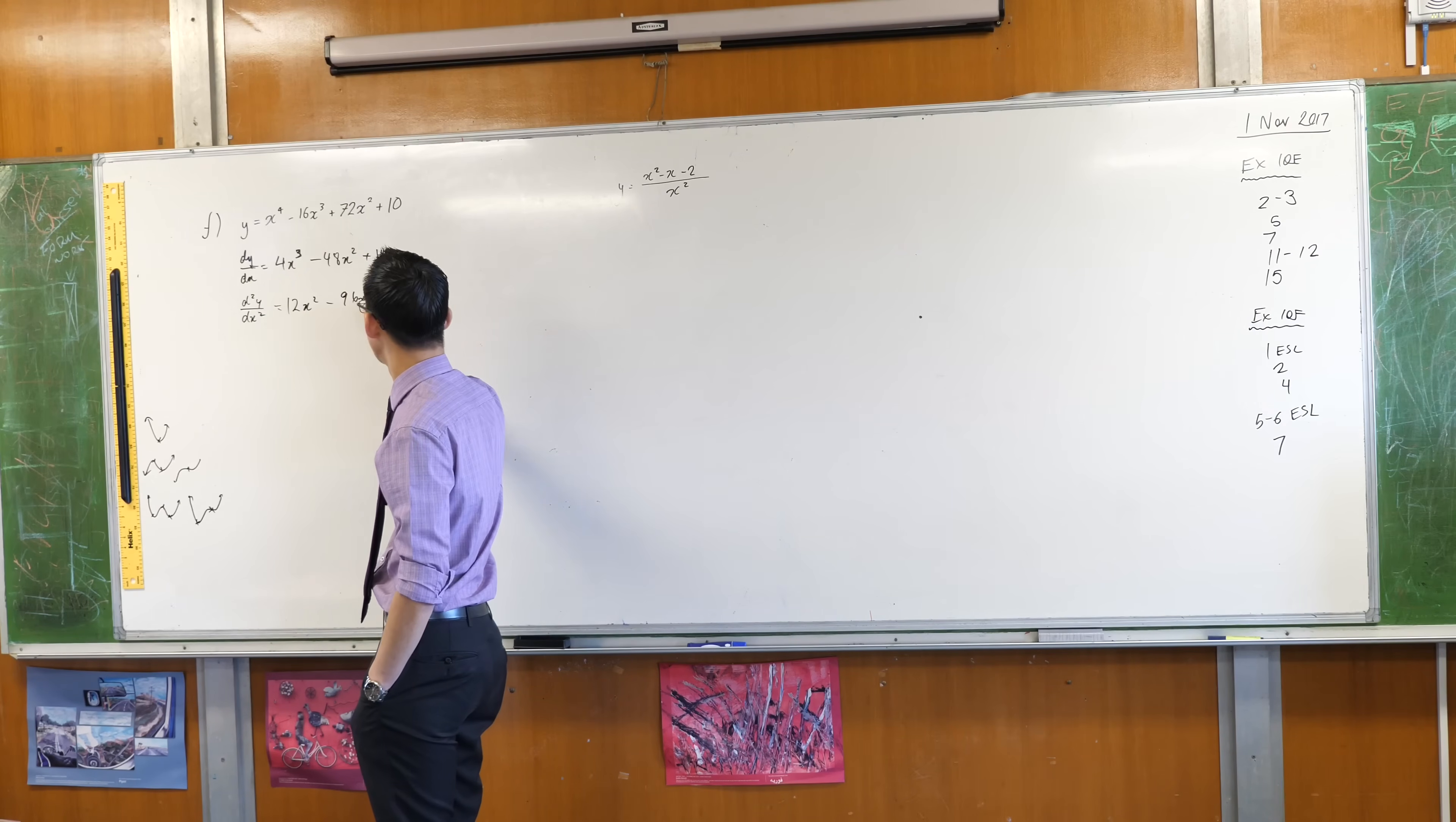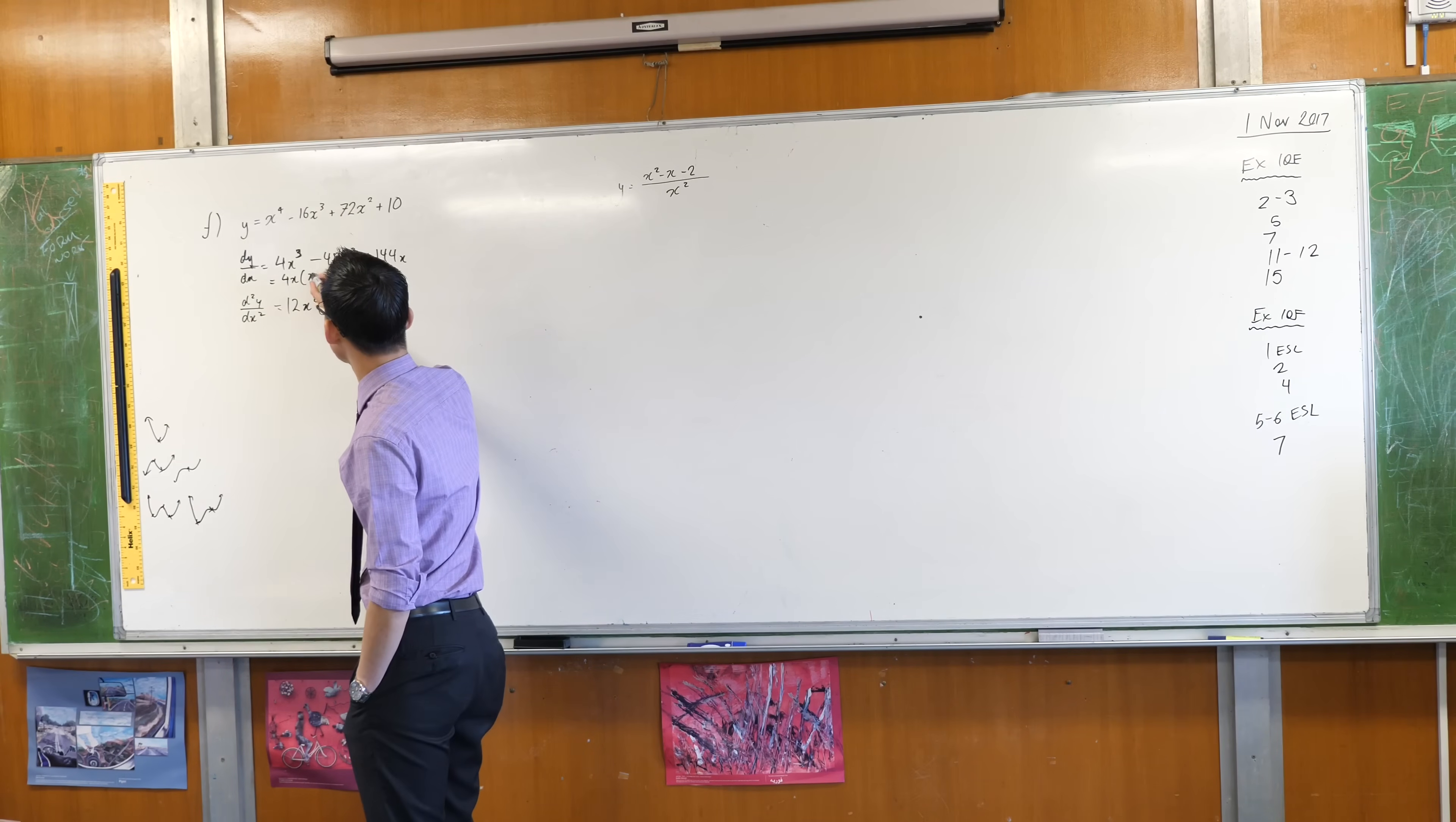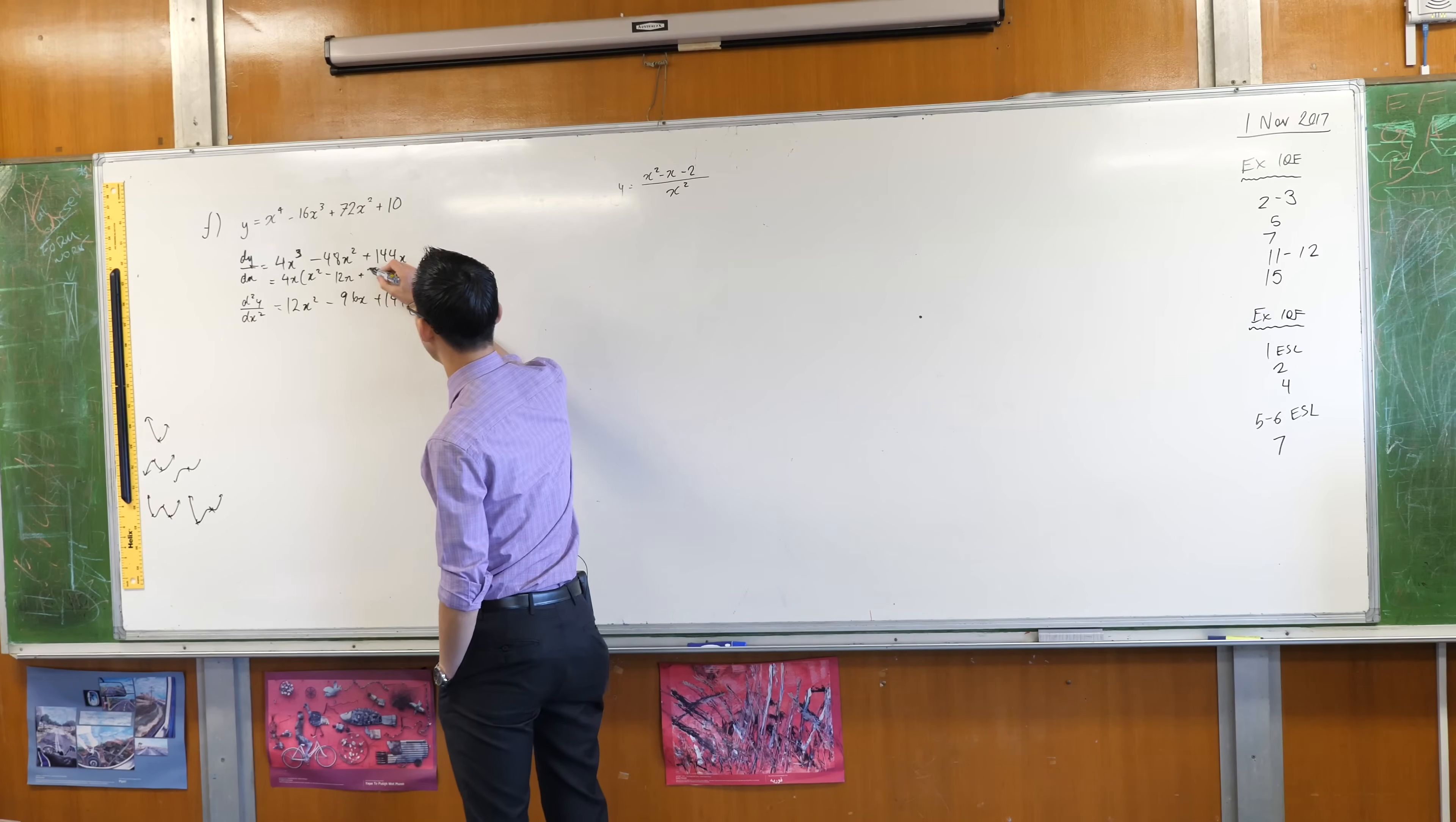So I will differentiate this again. That gives you 12x squared take away 96x positive 144. This first derivative here, I've got a whole bunch of common factors. In fact I can see that 4x is a common factor. What does that leave behind? x squared take away 12x plus 36.